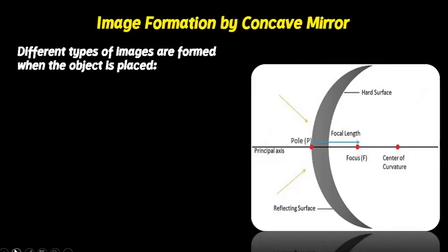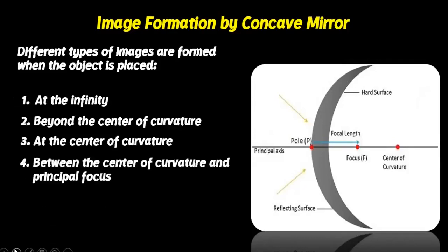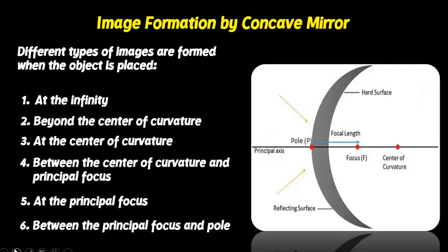By changing the position of the object from the concave mirror, different types of images can be formed. Different types of images are formed when the object is placed at infinity, beyond the center of curvature, at the center of curvature, between the center of curvature and the principal focus, at the principal focus, or between the principal focus and the pole.